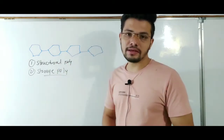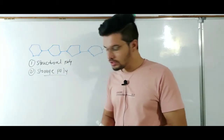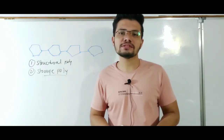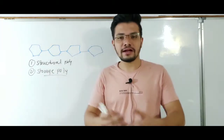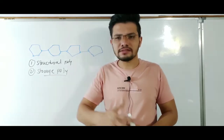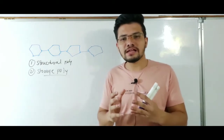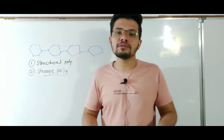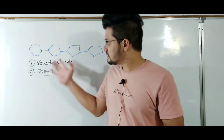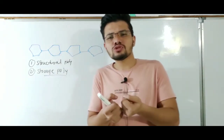Structural polysaccharides perform the function of helping the cells or providing stability to cells or organs. They form the structures of cells like the cell wall or plasma membrane. So these structural polysaccharides are involved in the composition of those structures of cells which give the cells stability.